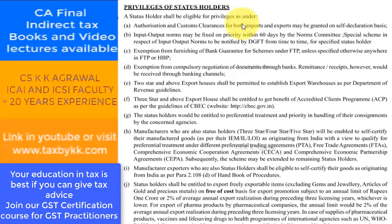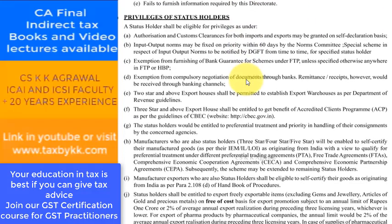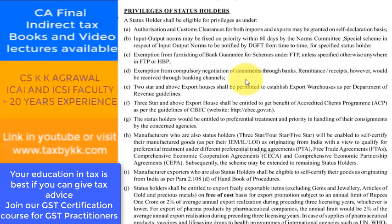This is our GST Volume 2 book, Foreign Trade Policy section. Benefit 1: Authorization and customs clearances for both imports and exports may be granted on a self-declaration basis.